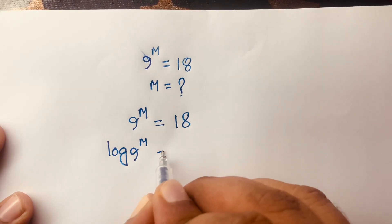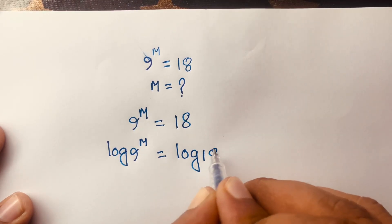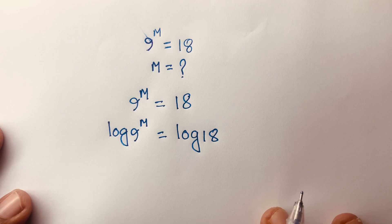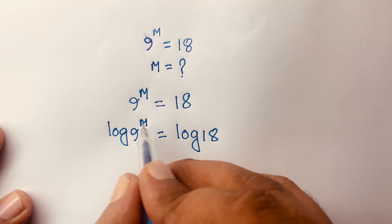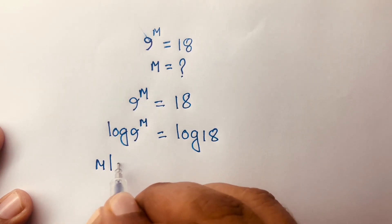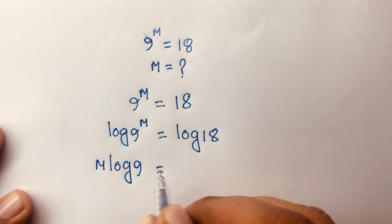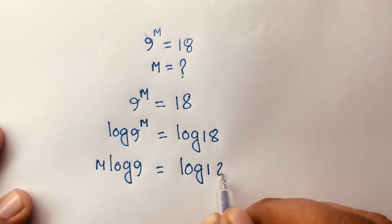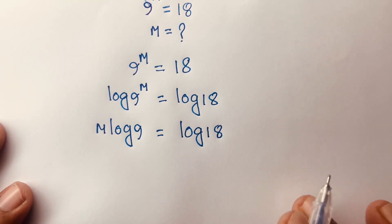I apply log to both sides, so I can say: log 9 power m is equal to log 18. Then, according to logarithm rules, the exponent m moves to the front, so it becomes m times log 9 is equal to log 18.